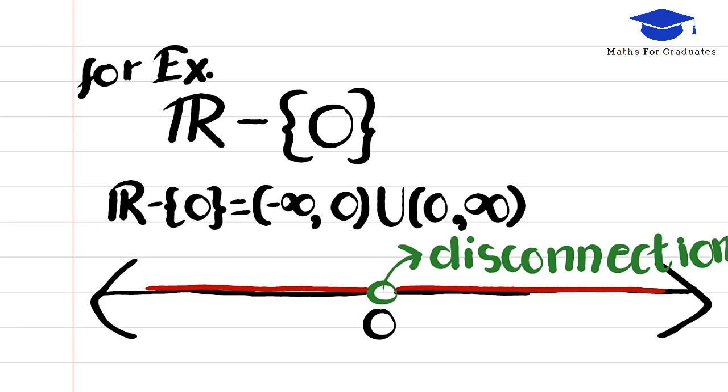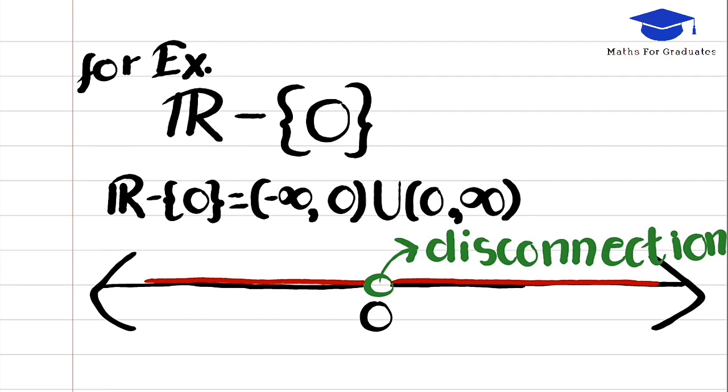For example, R-{0} is not connected since it can be represented as union of two open sets. If we represent this set on the real line, we can see the disconnection.